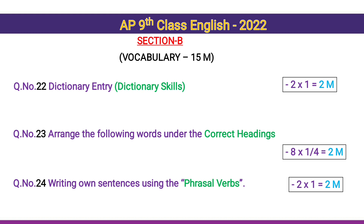Question 23: Arrange the following words under correct headings — 8 words will be given for persons, things, places, suffixes, prefixes, etc. — 8 into one-fourth equals 2 marks. Question 24: Writing own sentences using phrasal verbs — 2 ones for 2 marks.